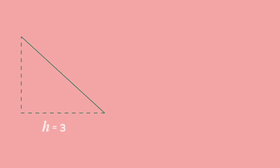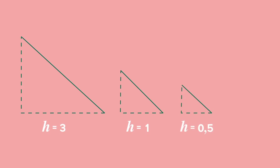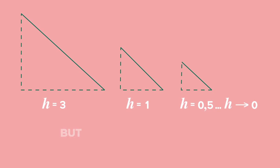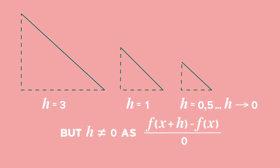So, as the two points get closer together, as h becomes 0, the average gradient between the two points becomes the actual gradient at the point. However, h cannot equal 0, as that would give us a 0 denominator. So we must use limits.